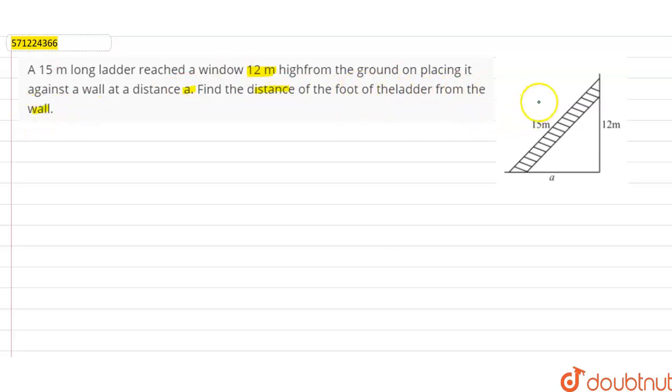So this is our ladder, this is the wall, and we have to find the value of a. As you can see, this is a right angle triangle, and in any right angle triangle we can apply the Pythagorean theorem.